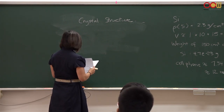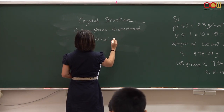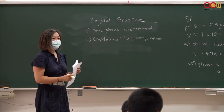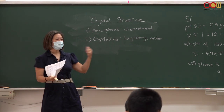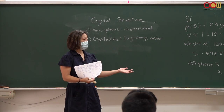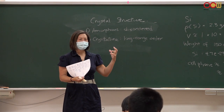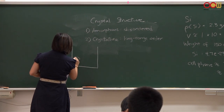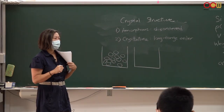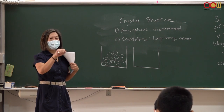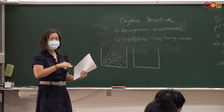Carbon has the same number of valence electrons whether in diamond, graphite, or nanotube form — so why do they behave so differently? The reason is the crystal structure. There are two basic kinds of materials: amorphous, which is disordered, and crystalline, which has long-range order. Think about a crate of oranges — if someone just threw them in, it's disordered, a jumble.